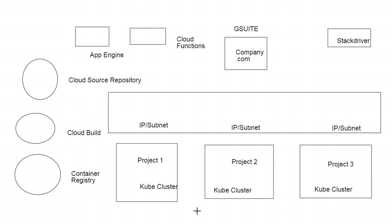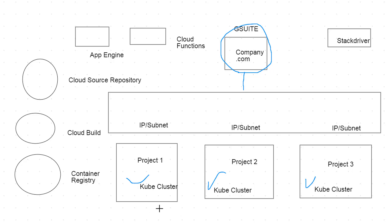Let's start by talking about clustering. For example, if I have a G Suite domain — say it's company.com — and we're already using G Suite with Gmail and Google Drive, we can extend that out to Google Cloud. When we consider doing this, we have a lot of options from an IAM perspective. We may want to use Kubernetes Engine and cluster our services between two or more projects — in this case, three projects.